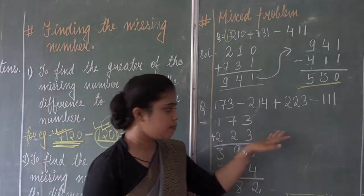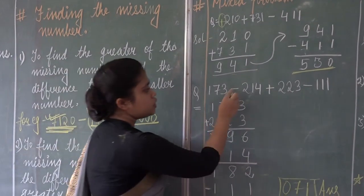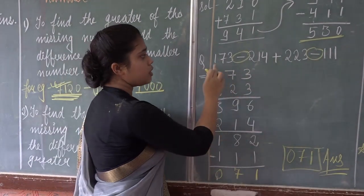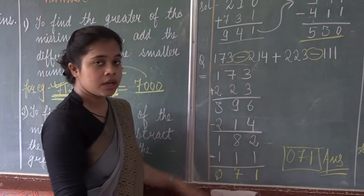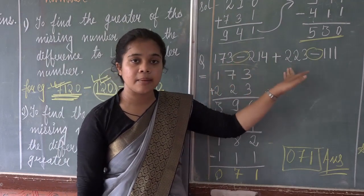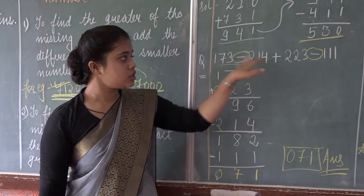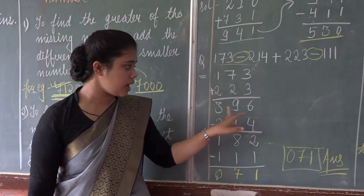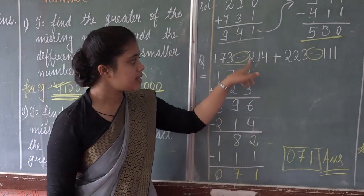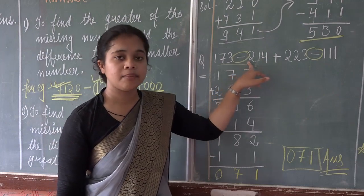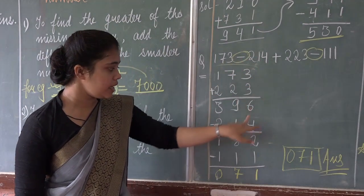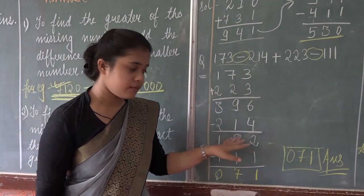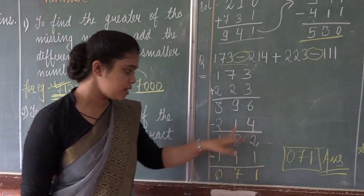Now let us see another example. In this example, you have two minus signs — two subtraction signs. First of all, you don't need to panic. We will first add the numbers that are having a plus sign: 173 plus 223. The sum of these two numbers is 396. After that, subtract the number having a minus sign before it — 240. When we subtract 240, we get 182. The difference is 182.